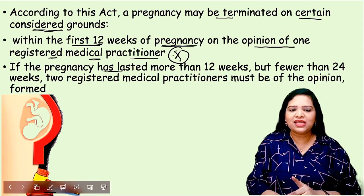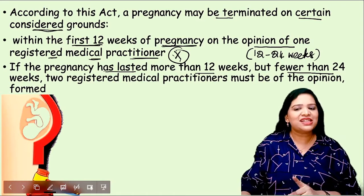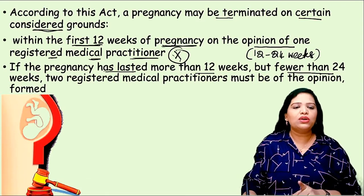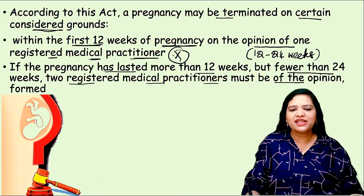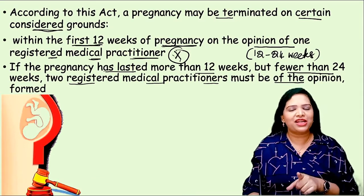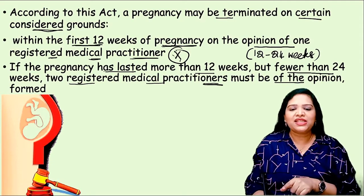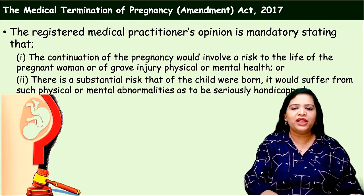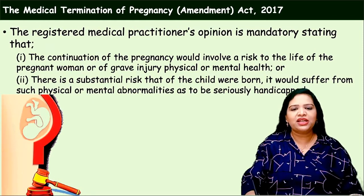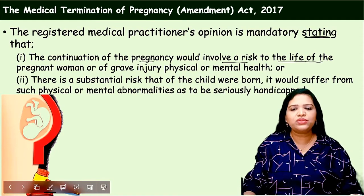If the pregnancy has lasted for more than 12 weeks but less than 24 weeks, this is a highly risky situation, but even then two registered medical practitioners must give their opinion. So if it is less than 12 weeks, the certificate of one medical practitioner is needed; if it is more than 12 weeks and less than 24 weeks, the opinion and certificate of two medical practitioners are needed.